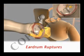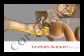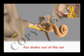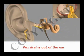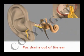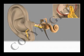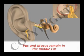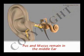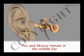Sometimes the eardrum ruptures and pus drains out of the ear. But more commonly, the pus and mucus remain in the middle ear due to the swollen and inflamed eustachian tube.